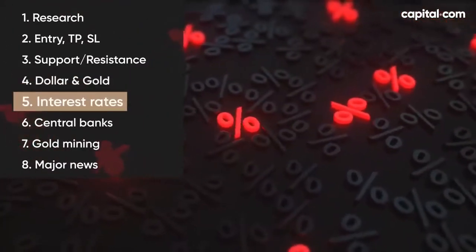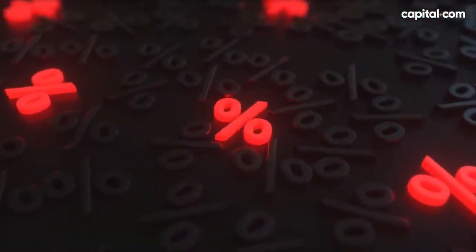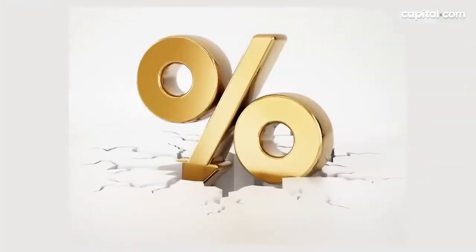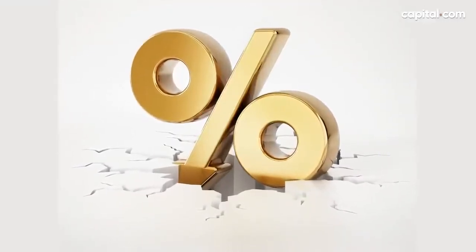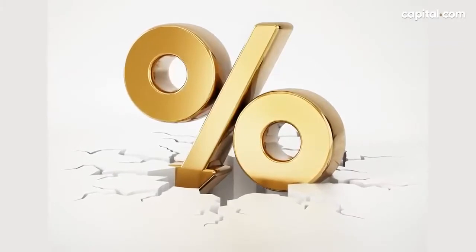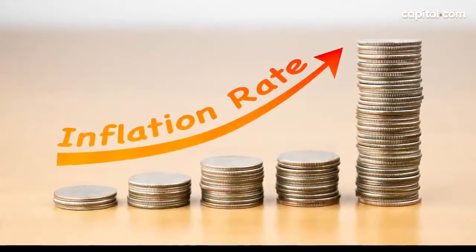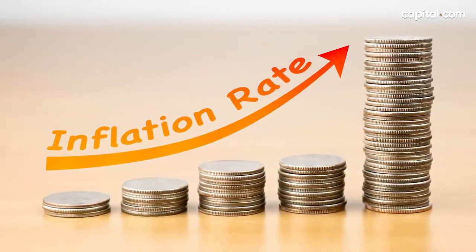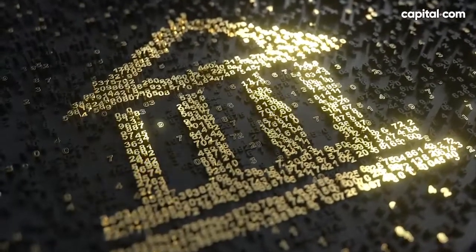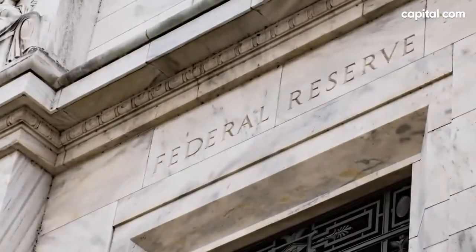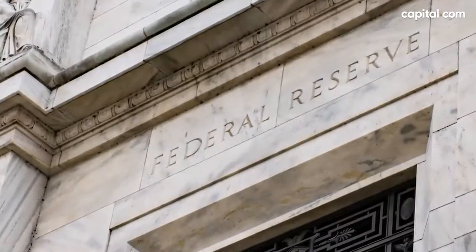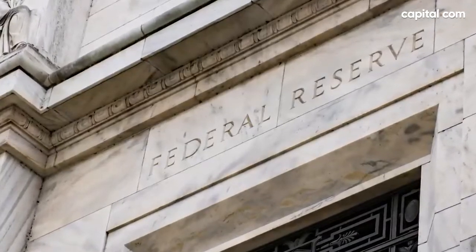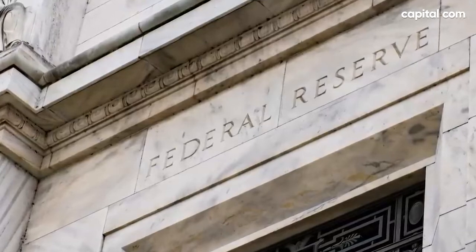The fifth thing you should keep in mind when trading gold are interest rates — or real interest rates, to be more precise. Gold has a correlation with them, with prices typically rising when interest rates go down and prices of gold dropping if interest rates should rise. Real interest rates are calculated by subtracting the inflation rate from the nominal interest rate, giving you a percentage adjusted for inflation. Historically, gold prices have gone down when the real interest rate is below 1%. So by watching the interest rates of the Federal Reserve and other central banks, you can find potential buying and selling opportunities, particularly if you're trading longer-term positions.